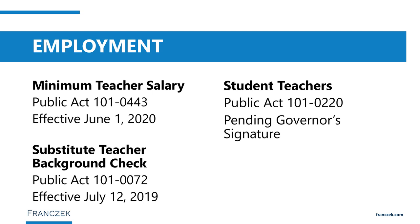The second employment law is Public Act 101-72, addressing substitute teachers who may teach in multiple districts. The regional superintendent is responsible for conducting the criminal history records check as well as checks of the statewide sex offender and violent offender against youth databases, and sharing that information with ISBE so it is available to other districts looking to employ that same substitute teacher.